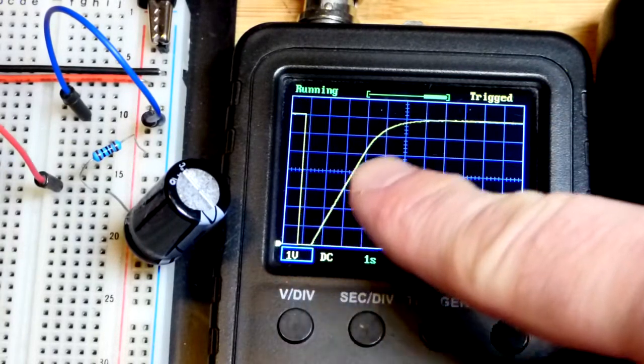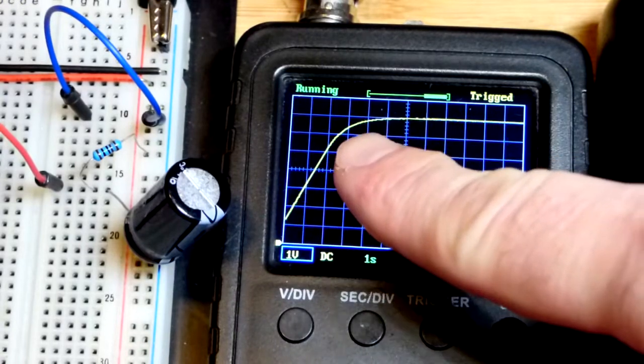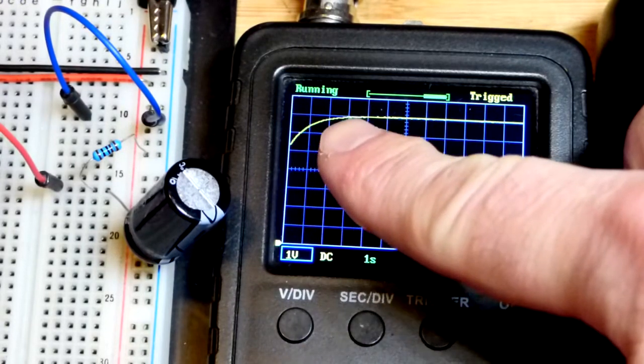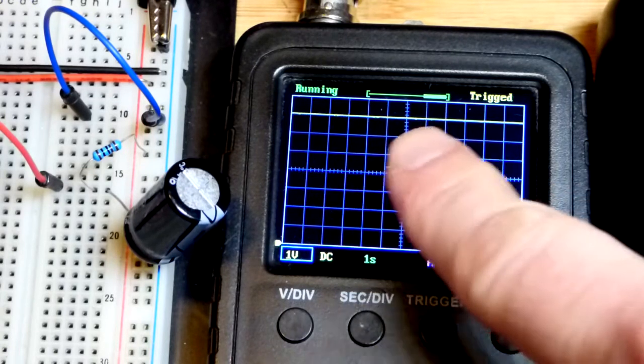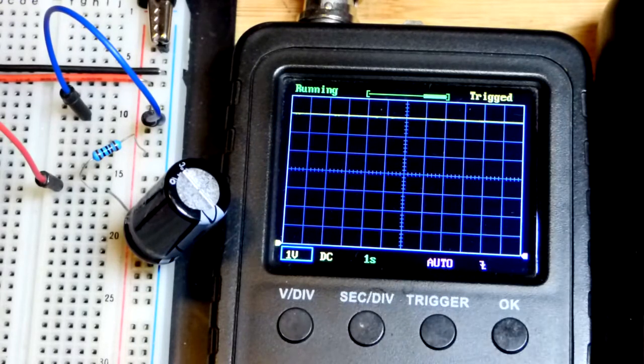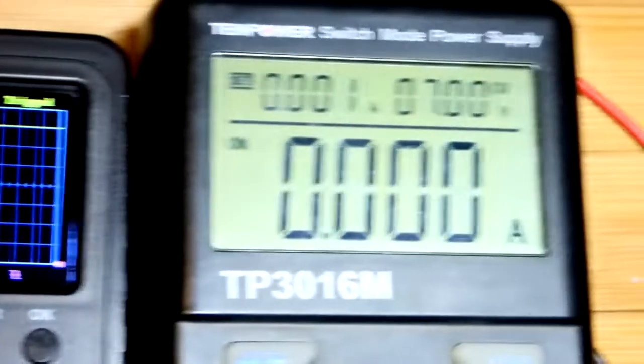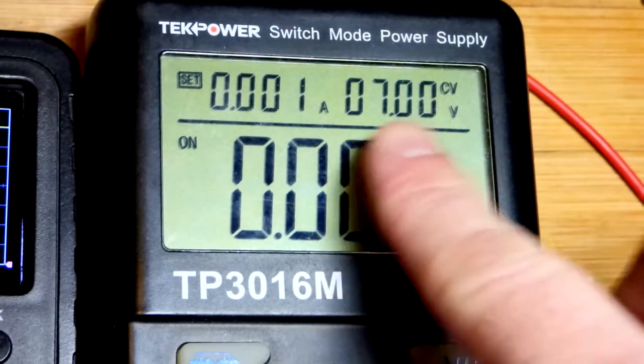It charged in a ramp, a straight line. The voltage was going up steady and then at that point the amount of current going into the capacitor slowed down. So we had a curve where the voltage didn't go up as fast. Ultimately we ended up at the supply voltage of 7 volts.